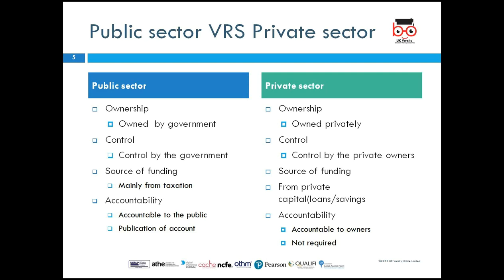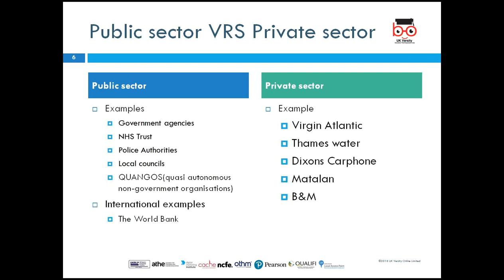The main source of funding for all public sector organizations comes from taxation. For the private sector, people use loans, savings, and borrowing to start their businesses. The public sector is accountable to the public because the funds were generated from the public through taxes, and they are required to publish their accounts. In the private sector, the owner is accountable to themselves and is not required to provide accounts to the public domain.